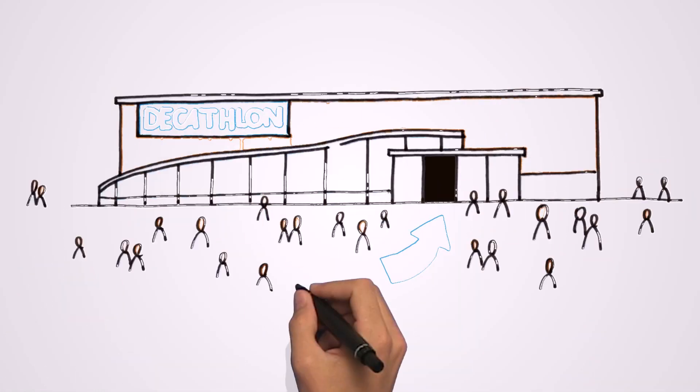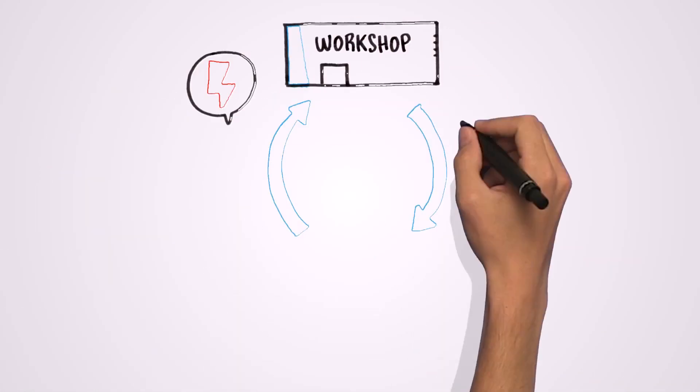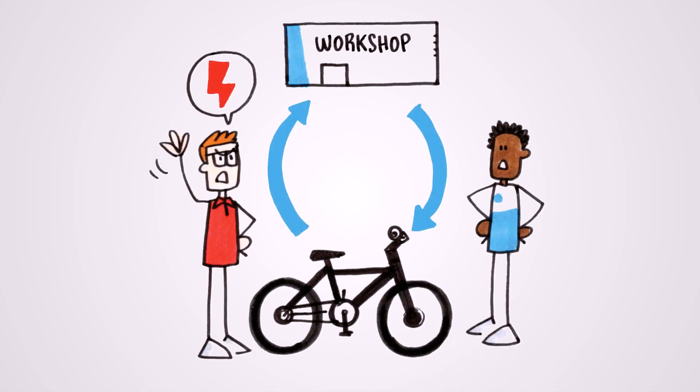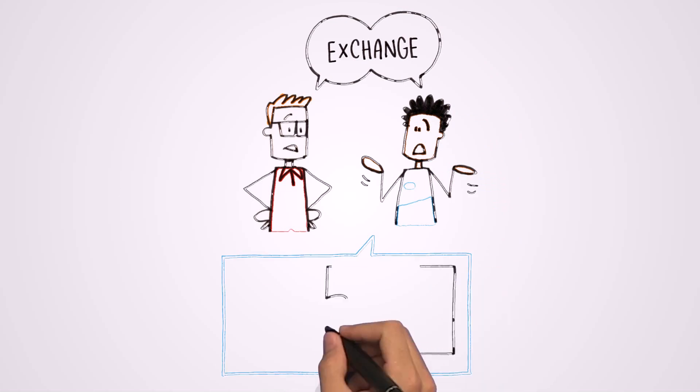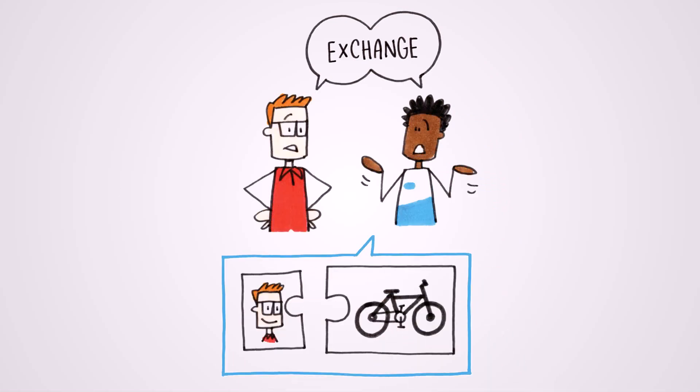Let's give an example in store. A customer isn't satisfied because his bike has made several trips to the regional workshop for repair. While talking with this customer, I realized the problem is that the product isn't appropriate to his use.